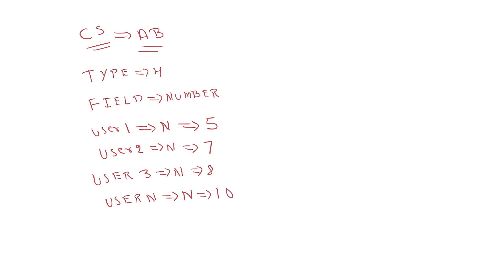So if this is the logic you want to implement, you can use the hierarchy type custom setting. In the Salesforce org, you can define what value each user will have for that particular field. There is one custom setting with one field — Number — but for User One, User Two, and User Three, different values are defined: five, seven, and eight respectively. For any other logged-in user, the value of Number will be 10.